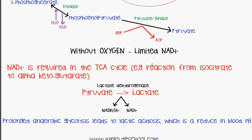NAD+ is required in the TCA cycle in two or three steps — one example is the conversion of isocitrate to alpha-ketoglutarate. To confirm: without oxygen, there are limited amounts of NAD+ produced, so what the body needs to do is convert pyruvate into lactate to help rebalance the amount of NAD+.